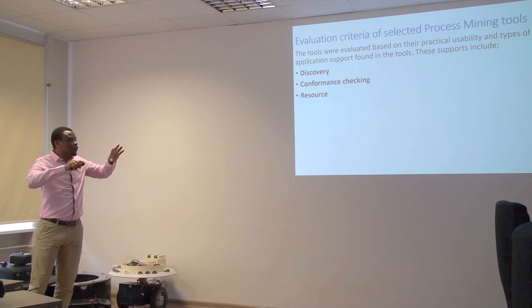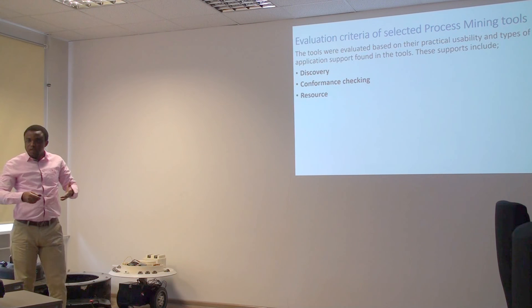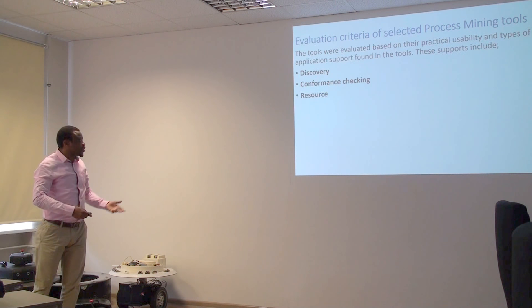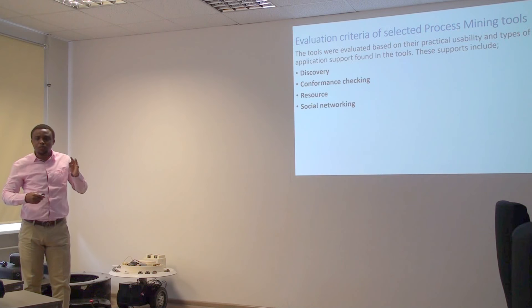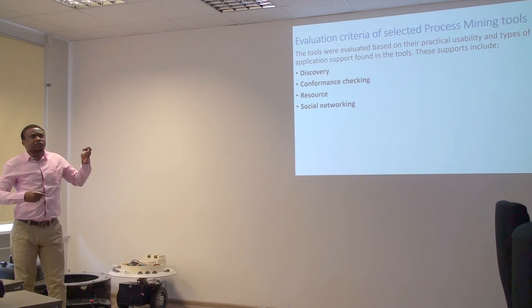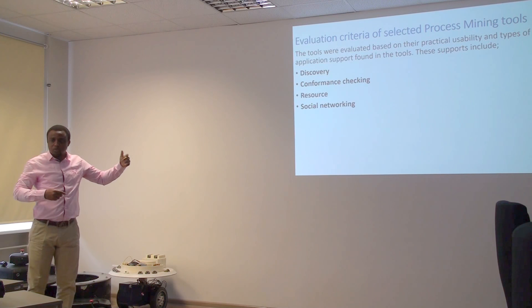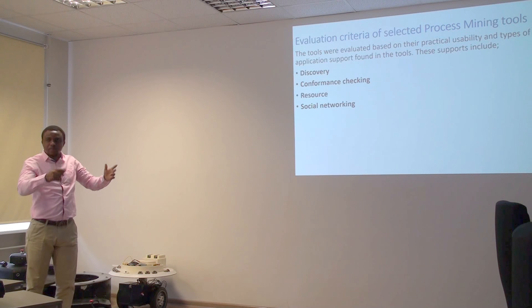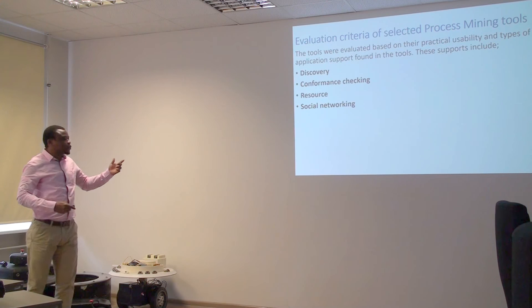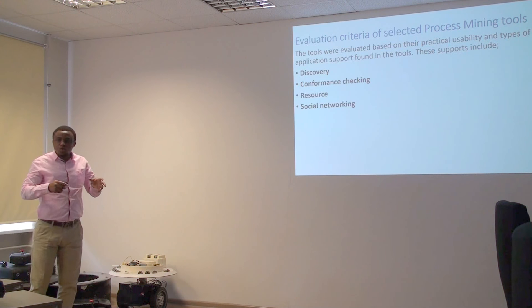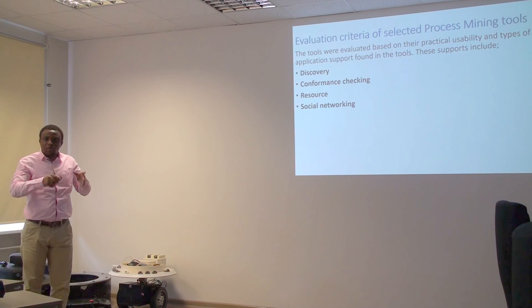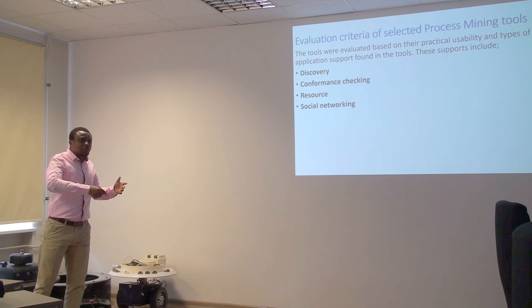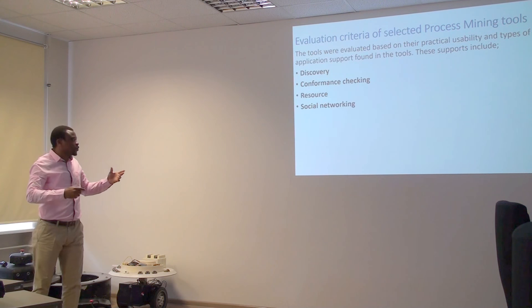Resources — the term simply means actors such as employees who took part in the business process. From literature, there are three significant columns you need to actually get an event log: the activity name, the timestamp, and the resource. The resource is not a compulsory column, but it is also a function that helps display the business process properly. Another functionality I considered is social networking — the ability of these tools to plot a map of the actors, how they transfer the job from hand to hand, and how the business actually went between offices from desk to desk. That is what social networking does.